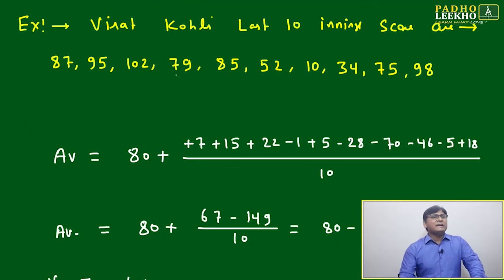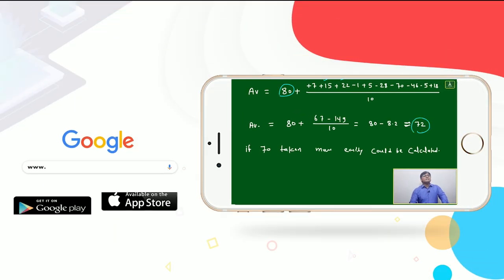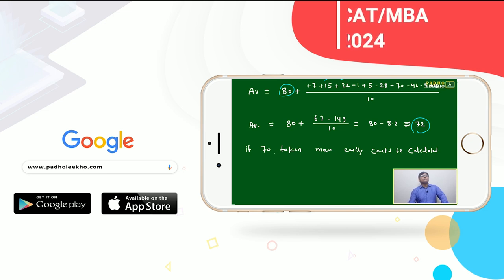Just take another one more example. Virat Kohli, last 10 innings, a score was 87, 95, this, this, this. You want to count based on the deviation, how to count? You just assume 80, you count all deviations, divide by this, this, this. Exactly you will get it is 72. Then you can say our assumption to take 80 was not very correct. If you had taken 70, then you would have got closer.